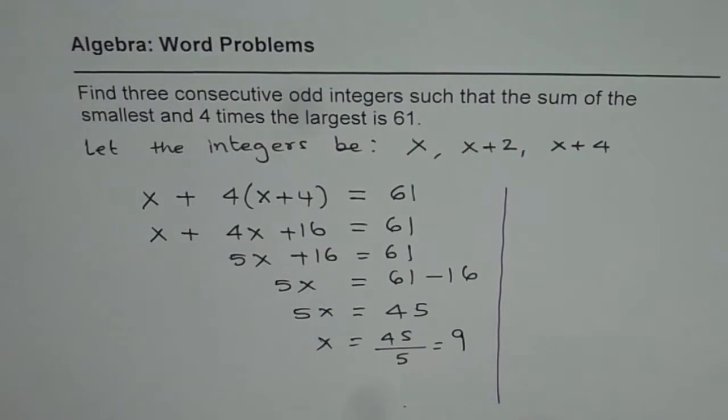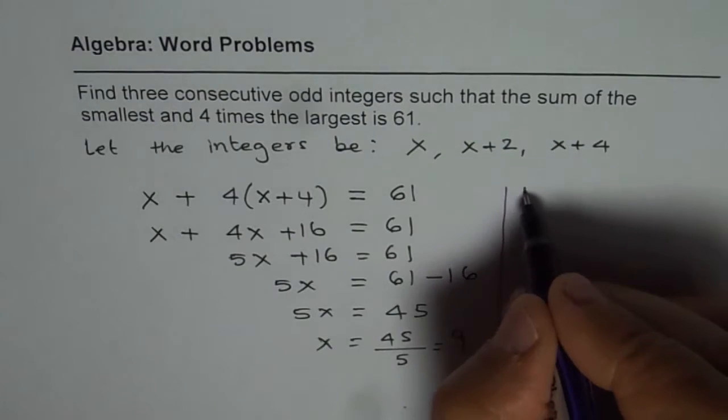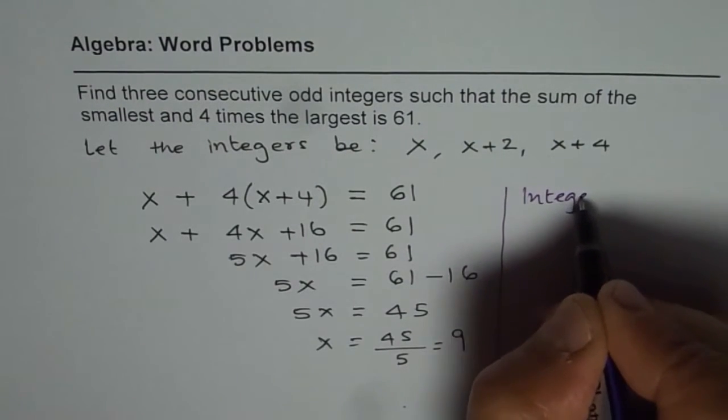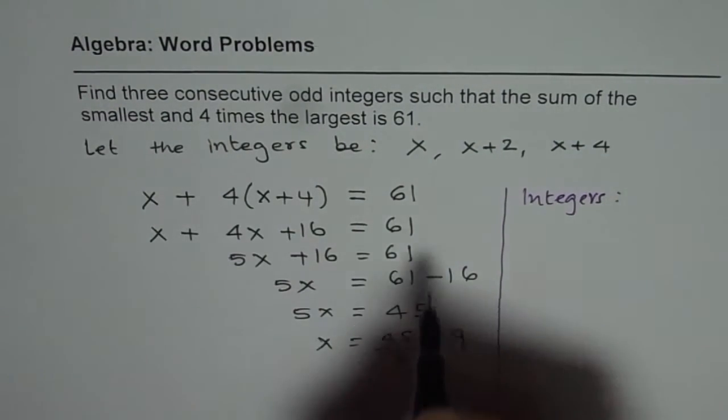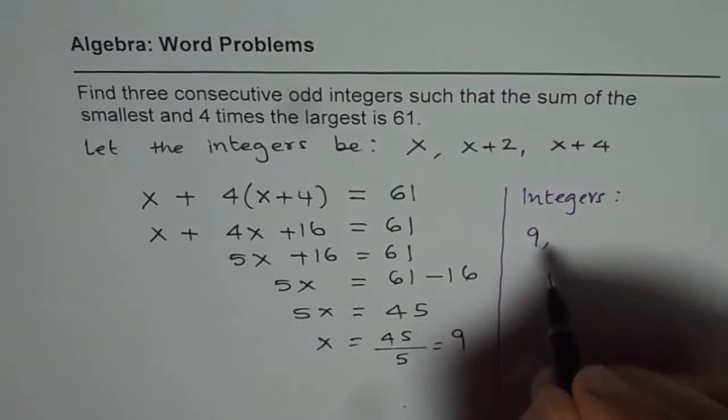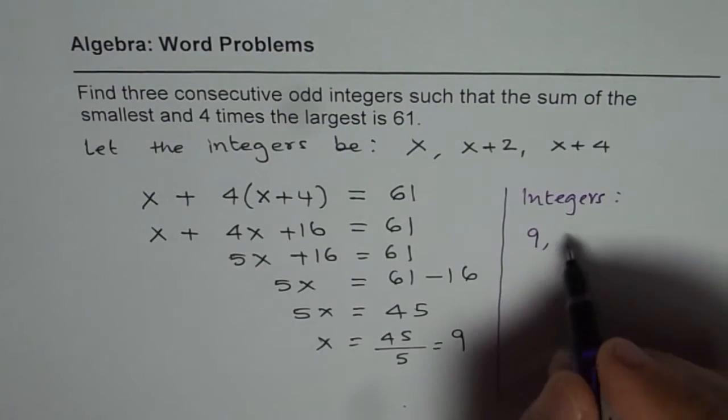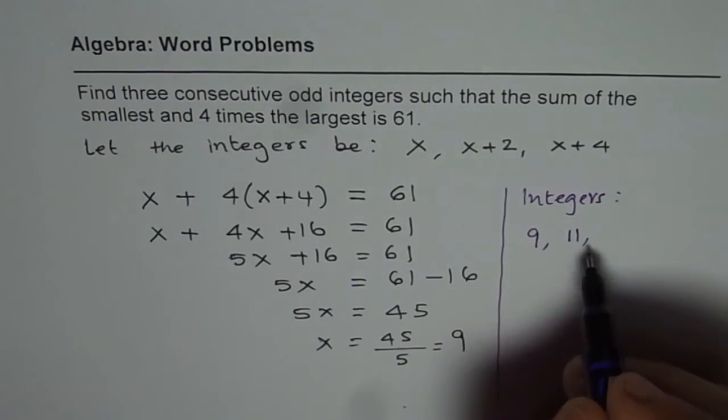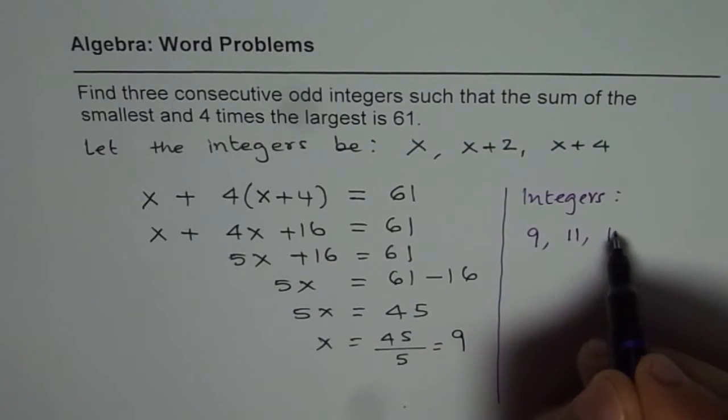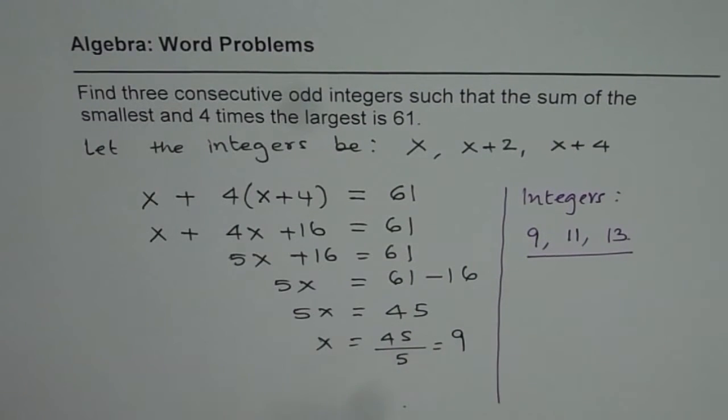So what are the integers? We have x = 9, the next one is x + 2, so it is 9 + 2 = 11, and then 11 + 2 is 13. So these are the three integers which will satisfy this condition. That is our answer.